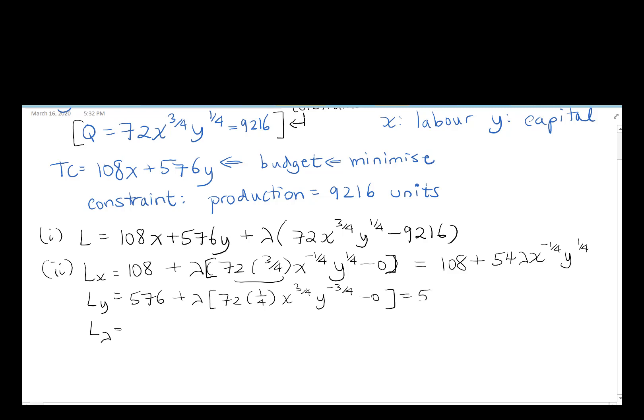Which will be 576 plus, it's going to be 18 when we multiply 72 by 1/4, x^(3/4)y^(-3/4). And L_lambda is going to be 72x^(3/4)y^(1/4) minus 9216 equals 0.